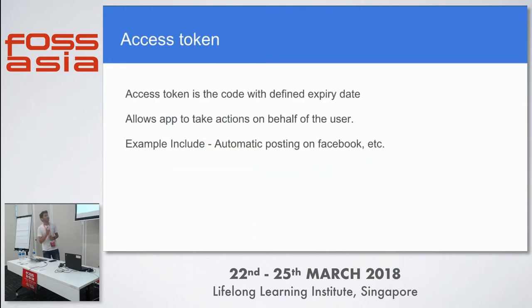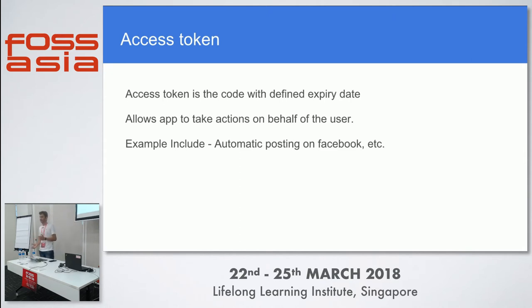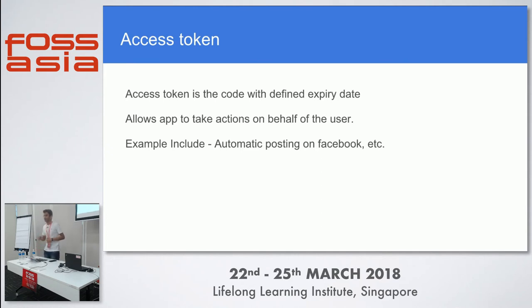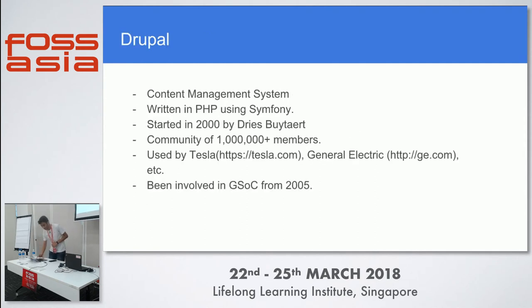The authorization code can then be used to get an access token from the authorization server. The access token allows an app to perform actions on your behalf. There are two types: short-lived and long-lived access tokens. Short-lived tokens must be refreshed periodically — for example, a Twitter access token is valid for six months and must be refreshed using a refresh token.